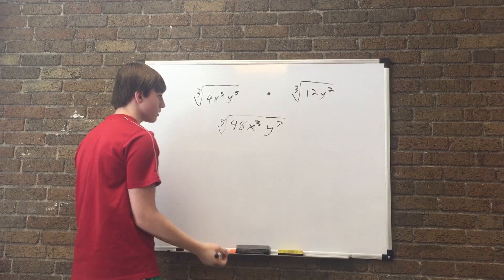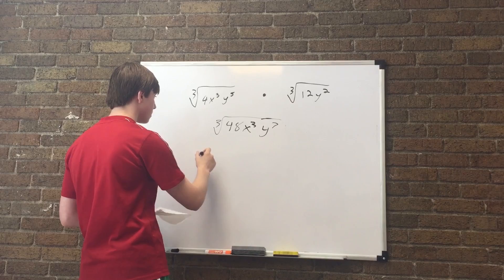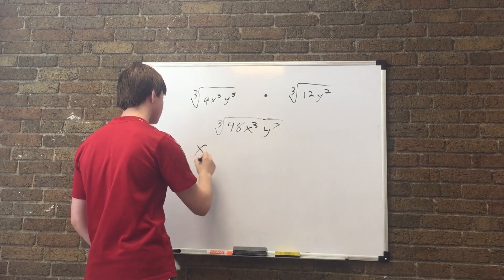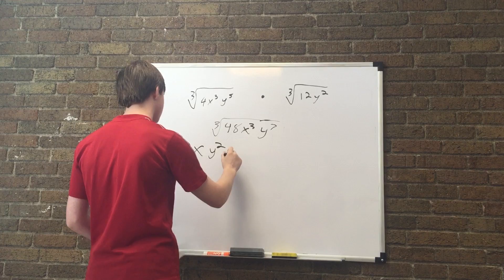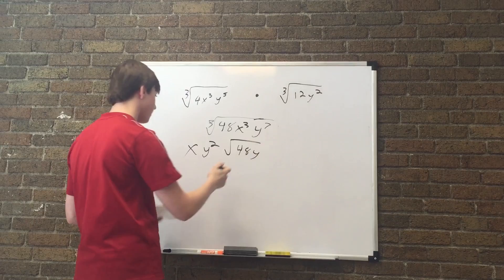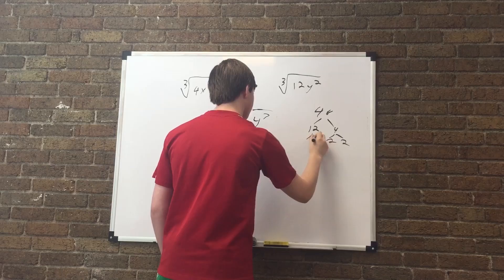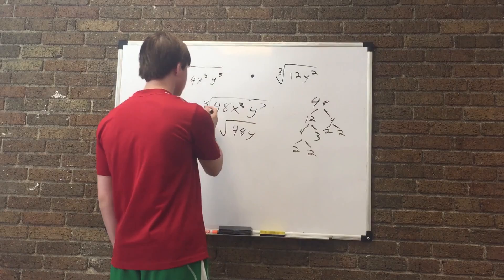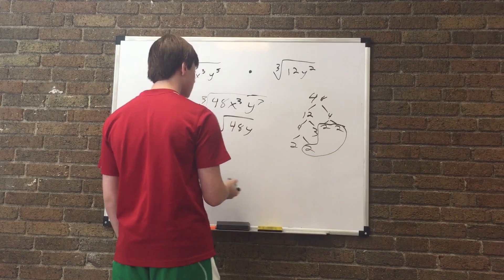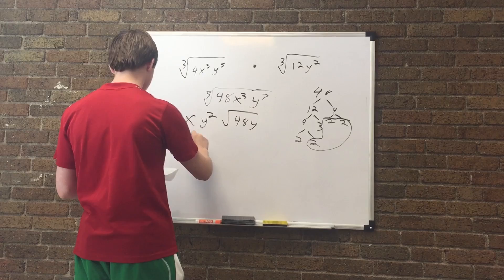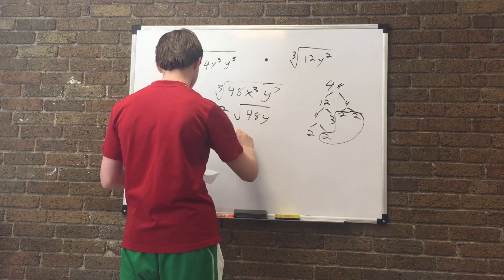And then you have to pull out the coefficients. So you see how many times 3 goes into the exponents. So you pull out 1x because 3 goes into 3 once. You pull out 2y's because 3 goes into 7 twice. And you're left with 48y. And so then you have to simplify the 48. So you take the 48, and you break it down into 12 and 4. You break the 4 down into 2 and 2. You break the 12 down into 4 and 3. You break the 4 down into 2 and 2 again. And because it's 3 squared, you have to take the 3 twos and you pull that out as a 2. And then you multiply the 2 and the 3 together. So that's 6. So then the final answer will be 2xy² and ³√6y.